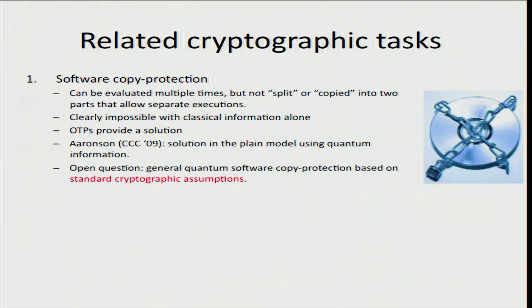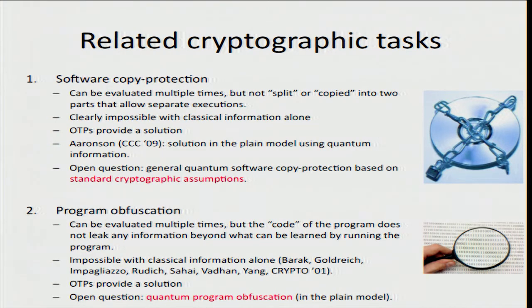A few related cryptographic tasks: software copy protection aims to allow a program to be executed multiple times but still not be split or copied into separate parts that allow separate execution. Like one-time programs, this is impossible using just classical information, although one-time programs themselves would provide a solution. There's also program obfuscation, where we hope to allow a program to be executed multiple times but the code doesn't allow the adversary to learn any information beyond what can be learned from running the program. Again, this is impossible with classical information alone. One-time programs would provide a solution with a bounded number of executions, but it remains an open question whether this is possible in general in the plain quantum model.